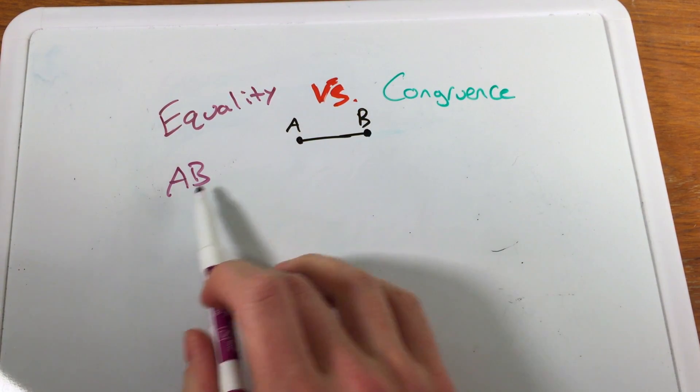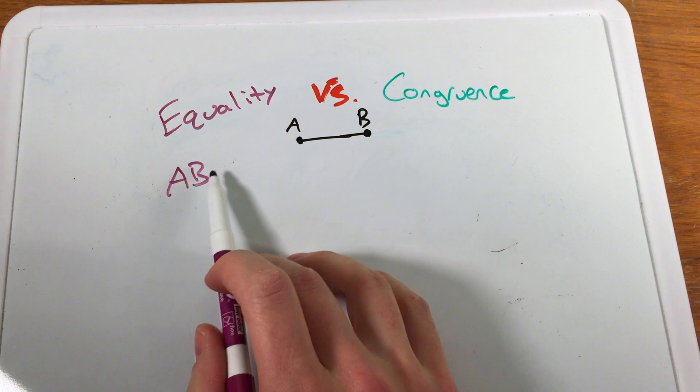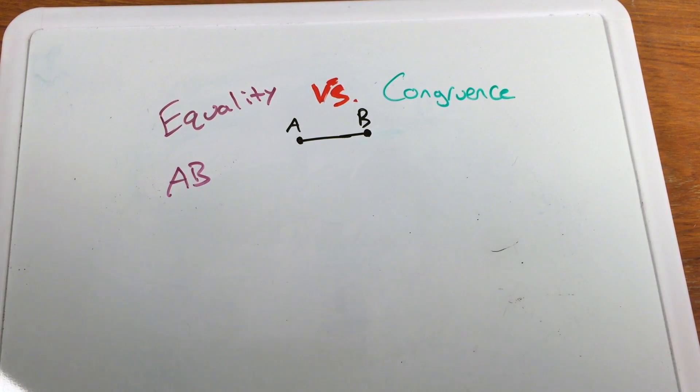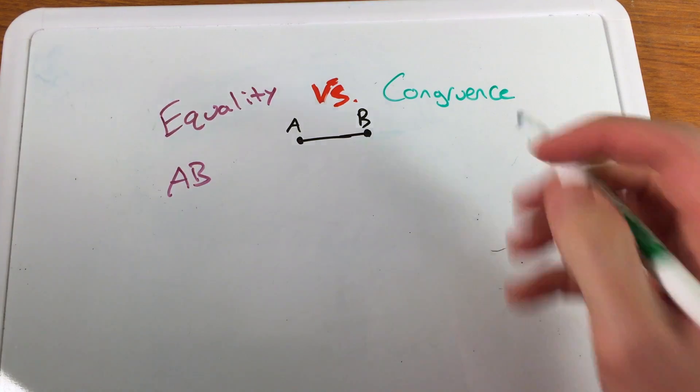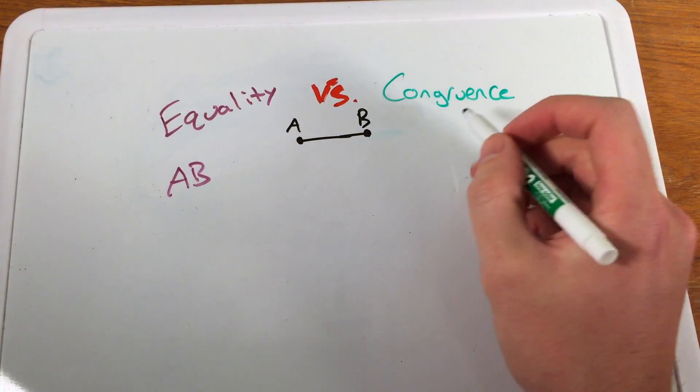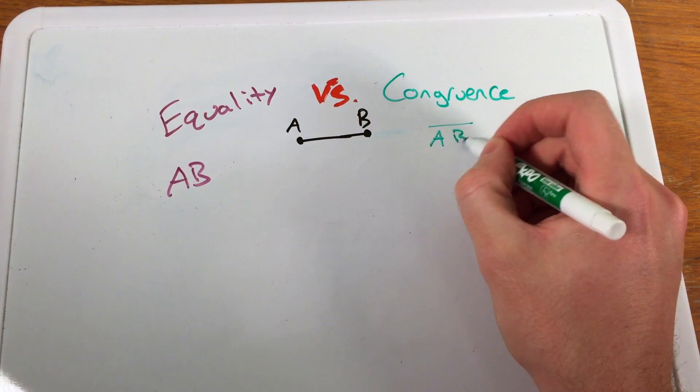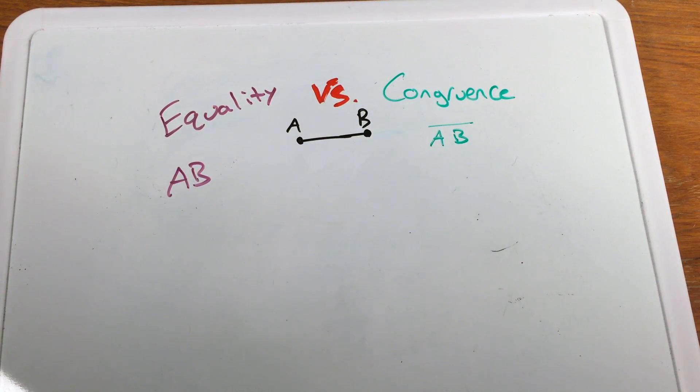If I'm referring to the length of segment AB, I would write it as such without a bar up top. If I'm referring to the congruence, or if I'm referring to the segment itself, not its measurement, not its length, I would write it as AB with a bar. This is referring to a segment, while this is referring to just the measurement, the length of AB.